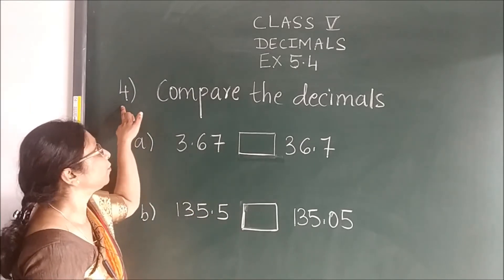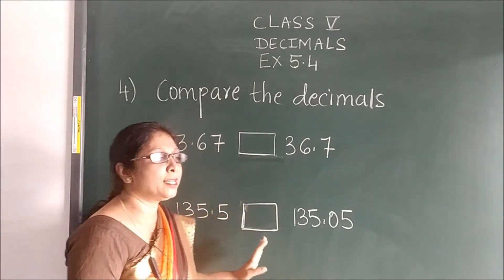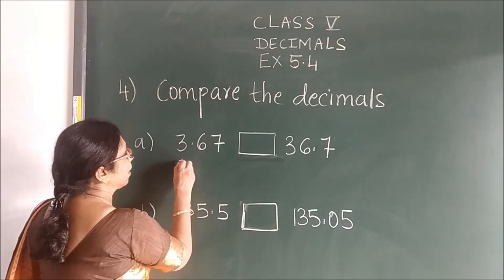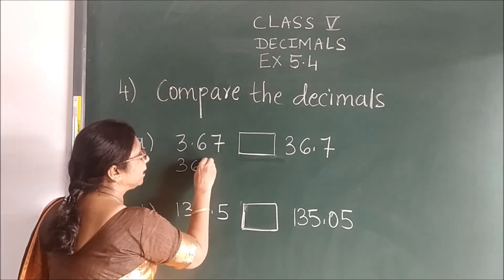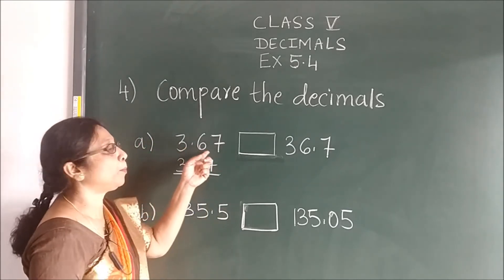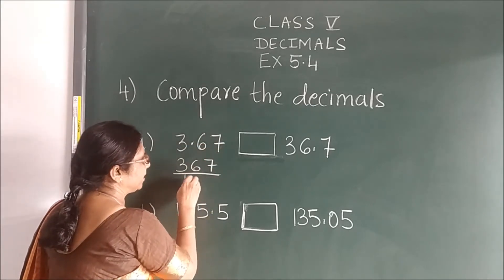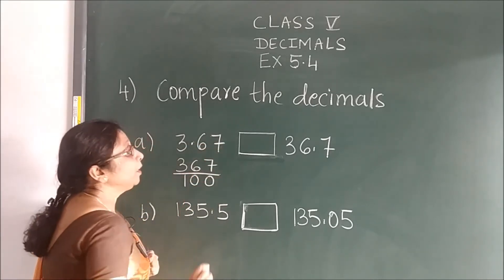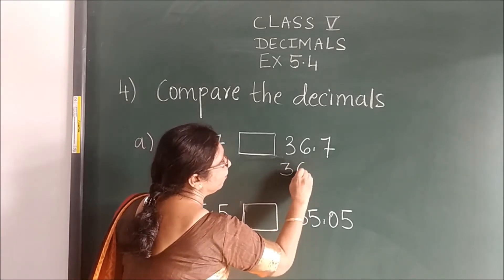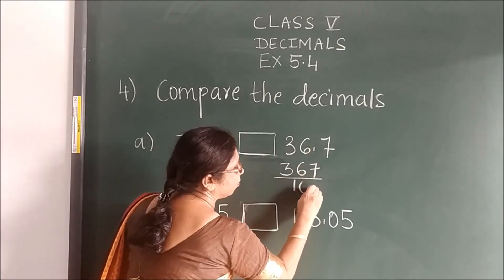Now next question is 4, compare the decimals. To compare the decimals, you will carry out the same steps. You will write this number as it is. Then after point, how many numbers are there? 2, 1, 2. So you will place here 2 zeros. Then here also you will do the same thing. After point 1 number, so place here 1 zero.